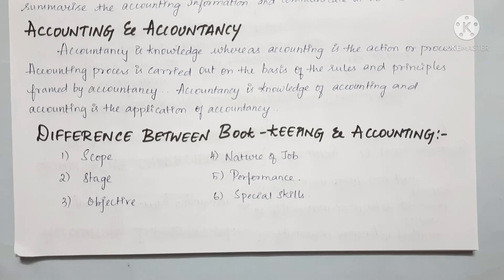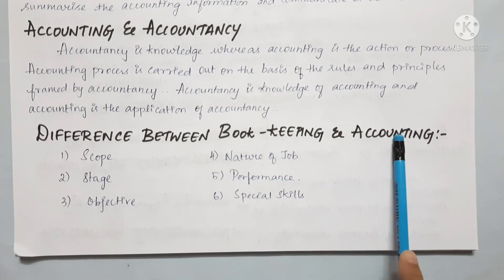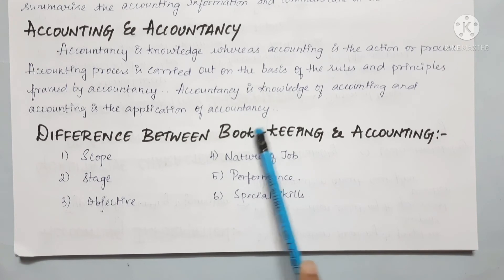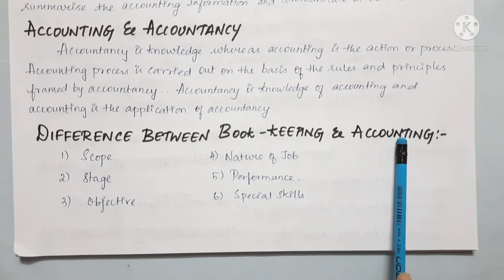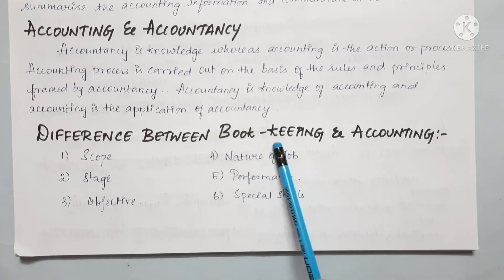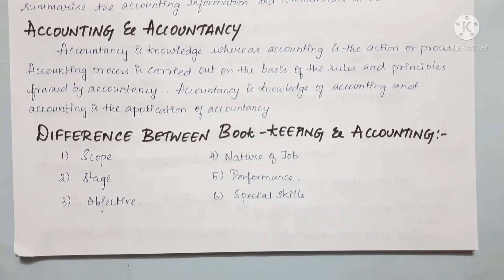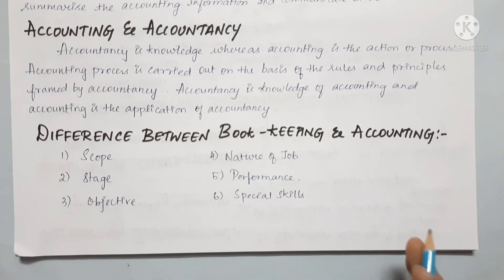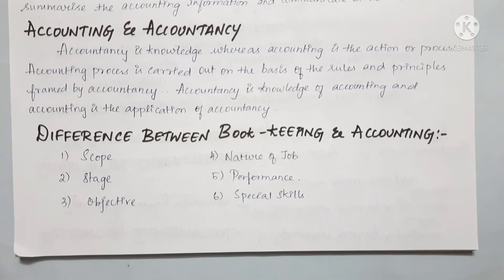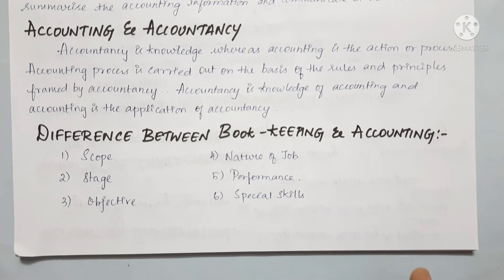For Stages, bookkeeping is the primary stage and accounting is the secondary stage — once bookkeeping is finished, we start accounting. For Objectives, bookkeeping's main objective is to maintain systematic records. In accounting, the objective is to prepare financial reports and communicate the financial position.